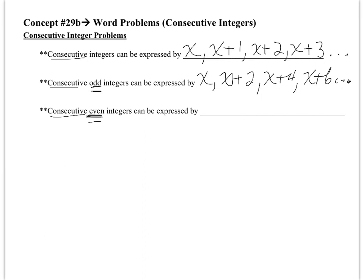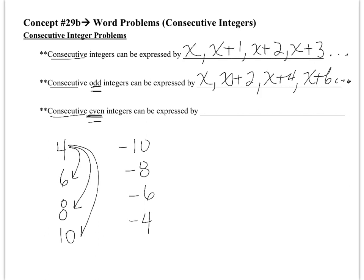Now let's talk about consecutive even integers. Even integers are also the same distance away from each other as odd integers. If you start with an even number like 4, the next one would be 6, then 8, then 10. Same with negatives: if I start with negative 10, the next would be negative 8, then negative 6, then negative 4. They're still two away from each other, so you'd be adding 2 to get the first one, then adding 4, then 6, and so on.